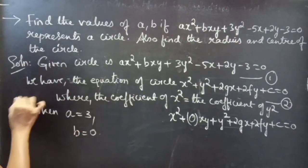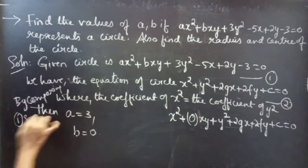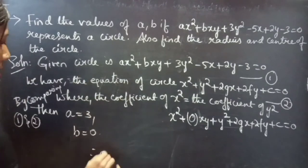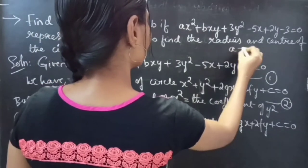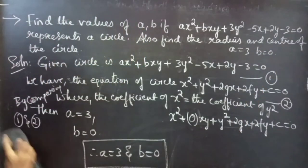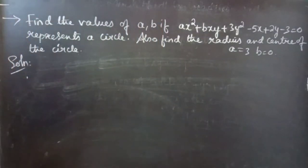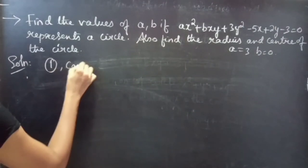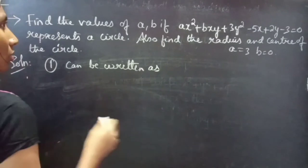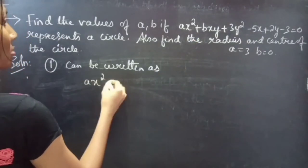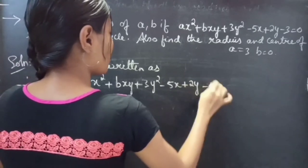By comparing equations 1 and 2, therefore A equals 3 and B equals 0. Now equation 1 can be rewritten as: 3 x squared plus 0 plus 3 y squared minus 5 x plus 2 y minus 3 equals 0.